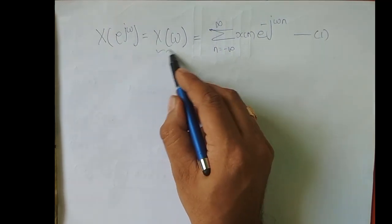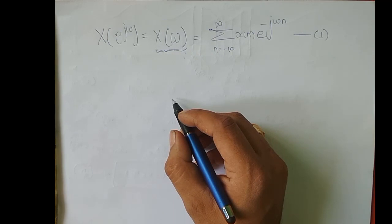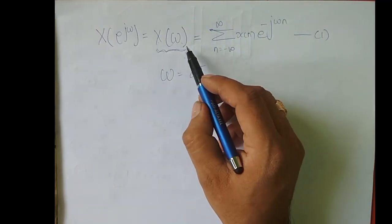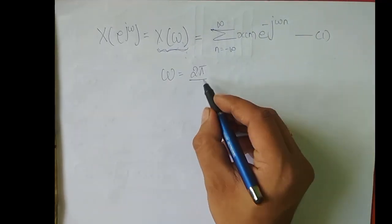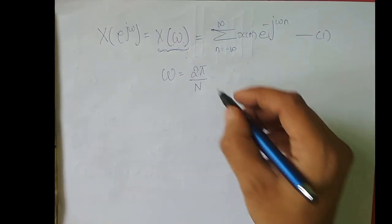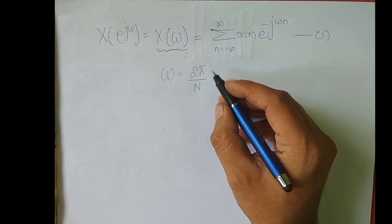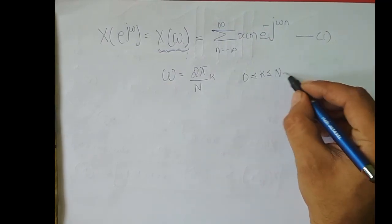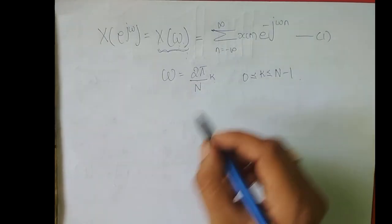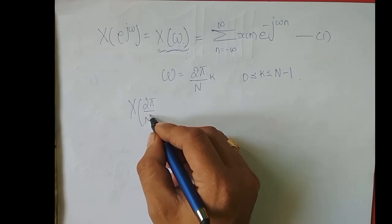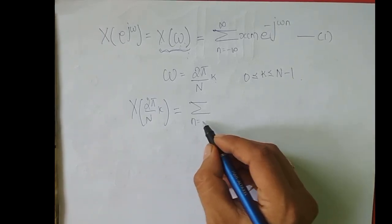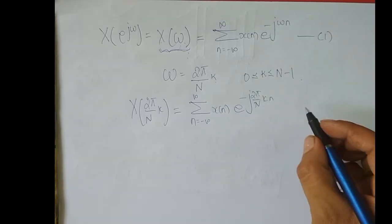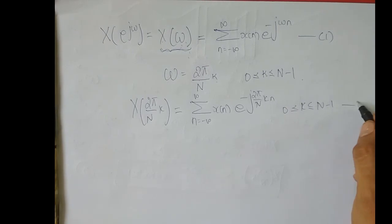What we did was sample this frequency domain into N equidistant samples. Since X(ω) is a periodic signal with fundamental period 2π, we sample it into N points. We introduce a variable k, an integer varying from 0 to N-1, and substitute ω = 2πk/N. So X(2π/N · k) equals summation n from -∞ to ∞ of x[n] e^{-j2π/N · k · n}, where k varies from 0 to N-1. This is Equation 2.